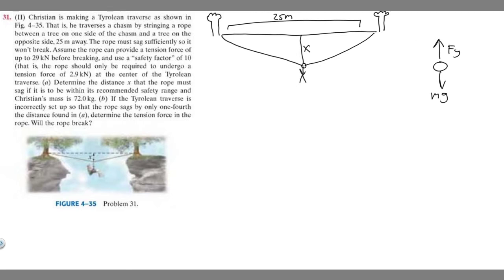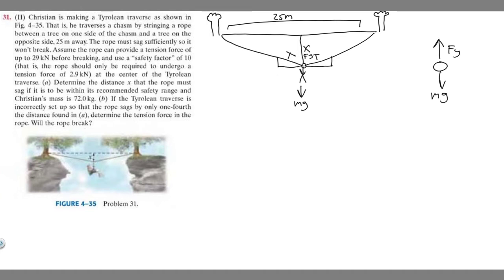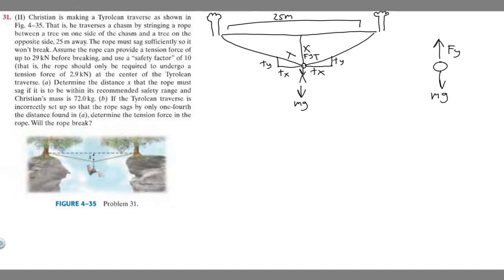Let's put the forces on our drawing. We have m times g pulling down, and F sub y holding it up. What I'm going to do is split the tension into vector components. Essentially, these form triangles. We have the force of tension — we know it's going to be 2.9 kilonewtons — and I'm going to label these as T sub x and T sub y on each side. These are just the tension components split into directions.